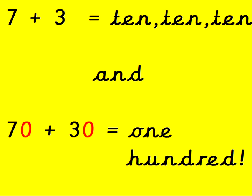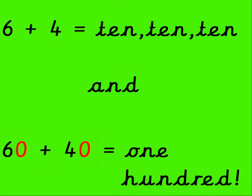7 add 3 makes 10, 10, 10, and 70 add 30 is 100. 6 add 4 makes 10, 10, 10, and 60 add 40 is 100.